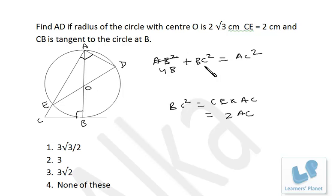Instead of BC², I can put 2AC over here. So AC² - 2AC - 48 = 0. If we factor, that's AC - 8 and AC + 6. So AC will be 8.